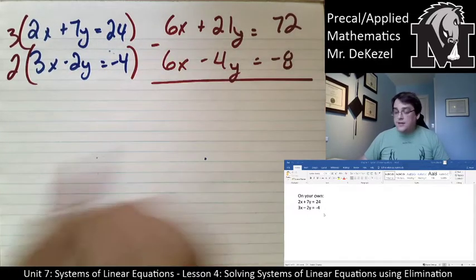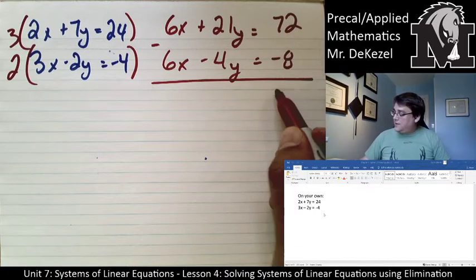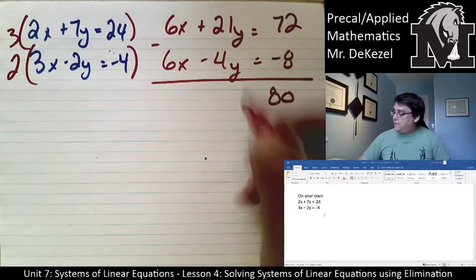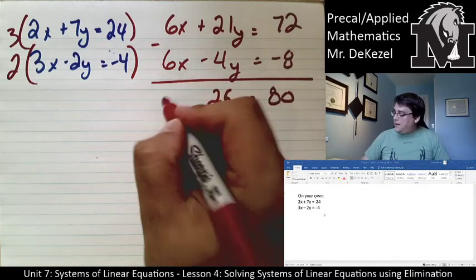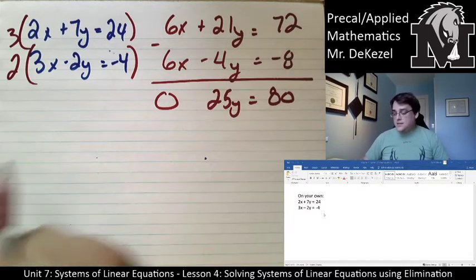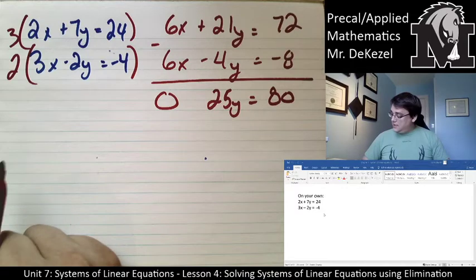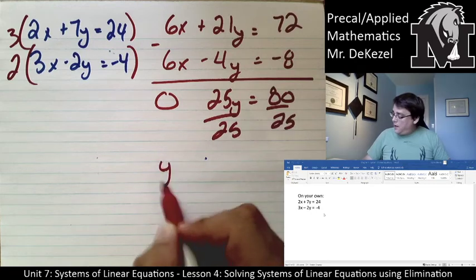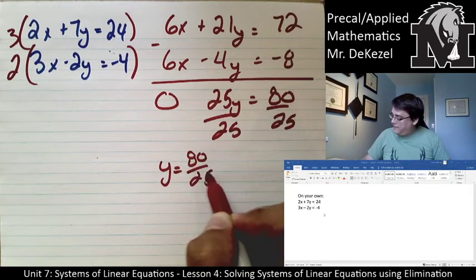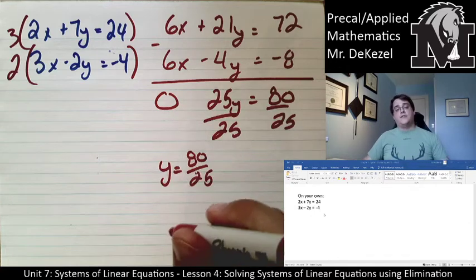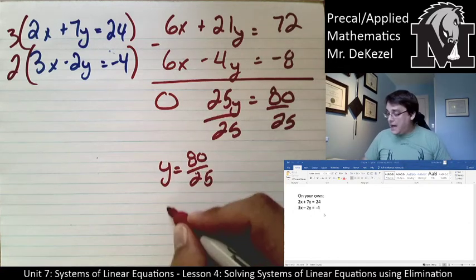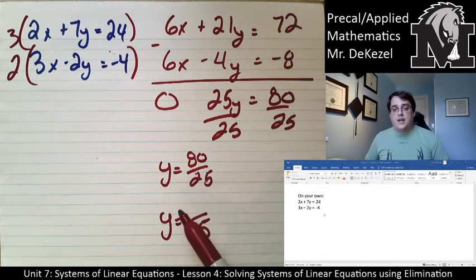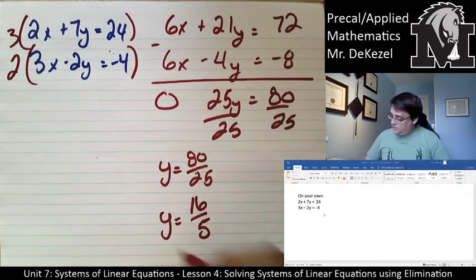Subtracting: 72 − (−8) = 80; 21y − (−4y) = 25y; 6x − 6x = 0. So 25y = 80, divide both sides by 25 to get y = 80/25. Dividing numerator and denominator by 5 gives y = 16/5.